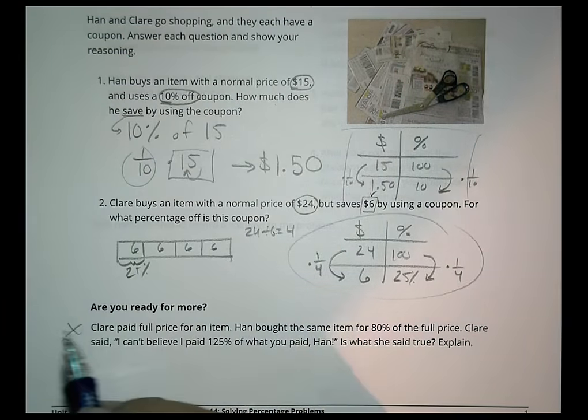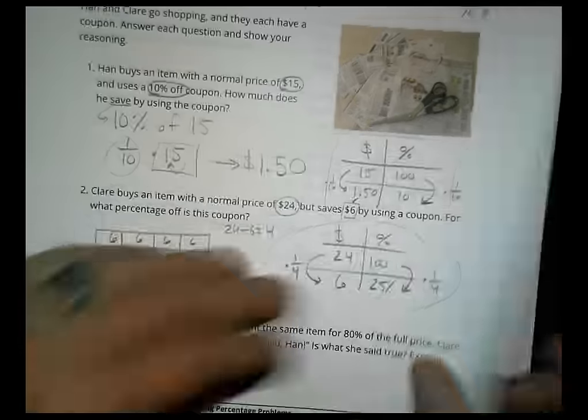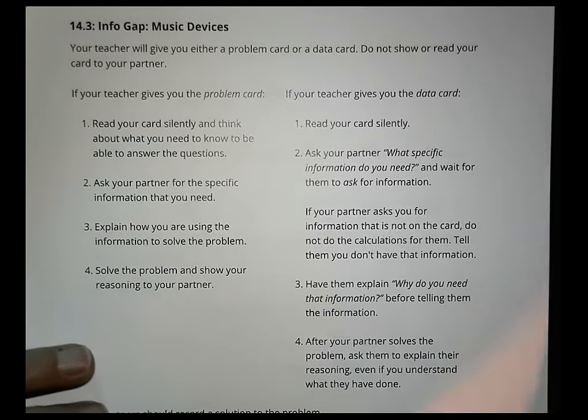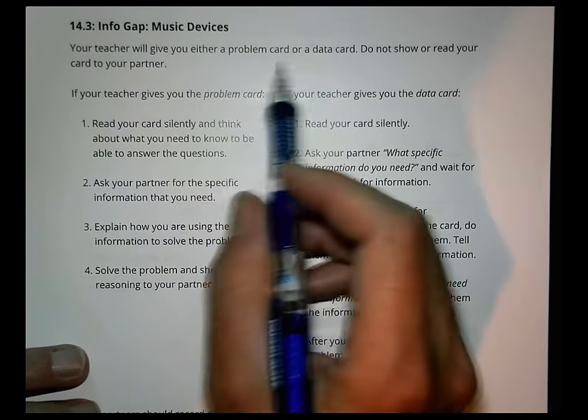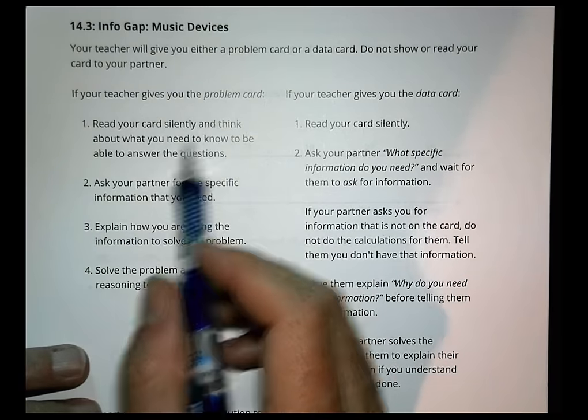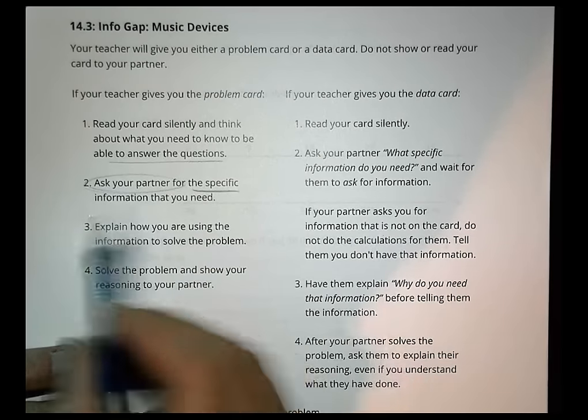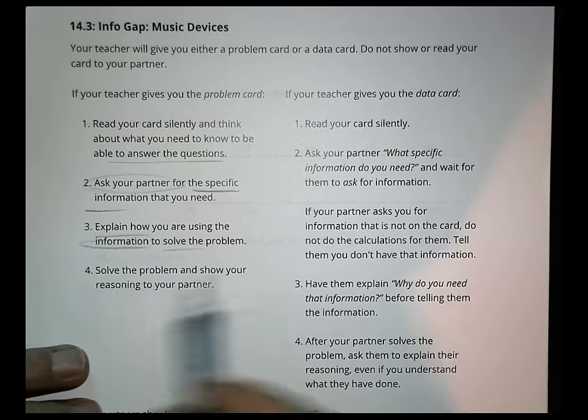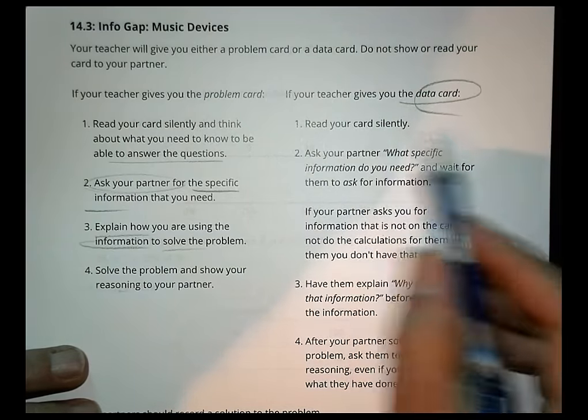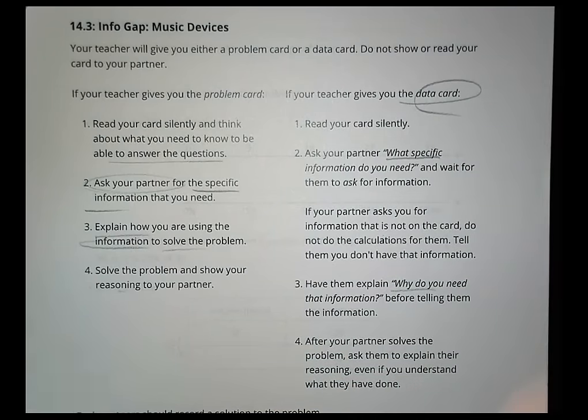We're going to skip the are you ready for more. The next part of the lesson is an info gap on music devices. Your teacher is going to give you a problem card or data card. Don't show or read your card to your partner. If you have the problem card, read it silently, think about what you need to know, ask your partner for specific information, and explain how you need the information to solve your problem. If you have the data card, read it silently, and don't just give them the numbers. Ask them why do you need it? Work on that with a partner now.